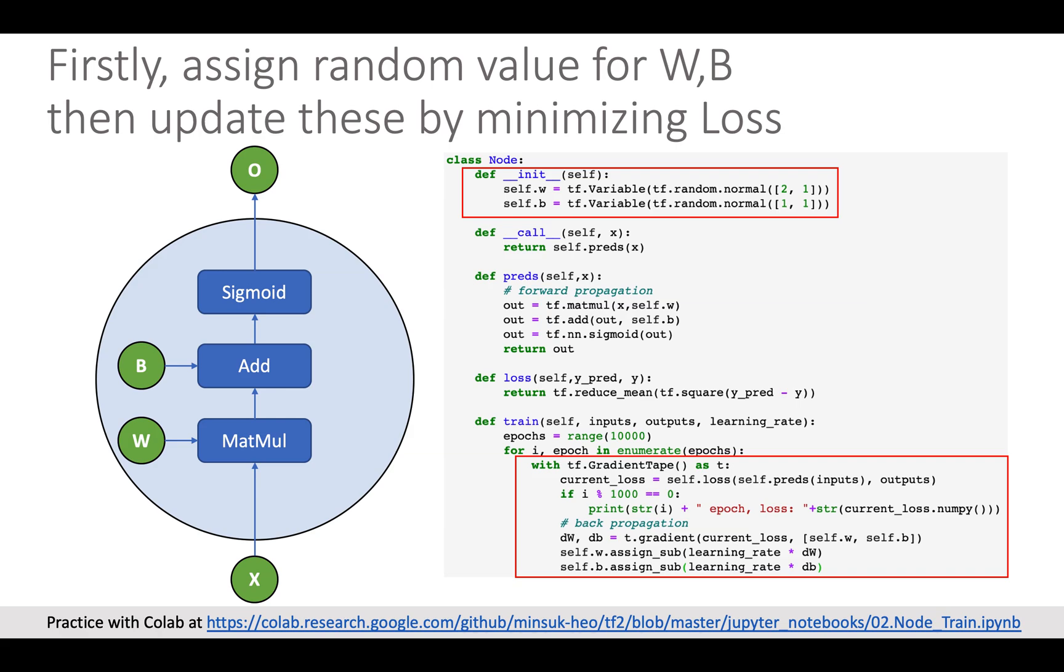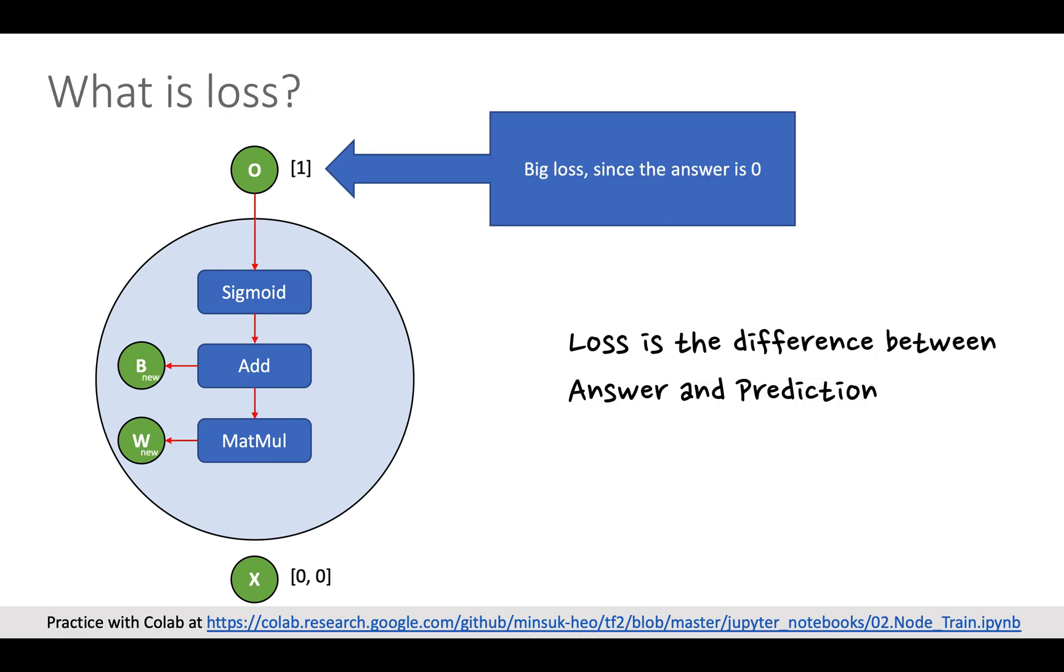Wait, what is loss and gradient descent? Well, firstly, the loss is the difference between the answer and the deep learning model's prediction.